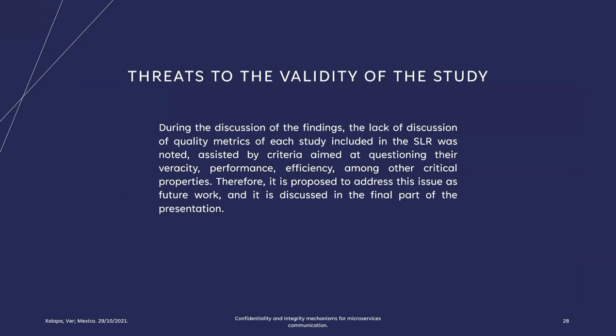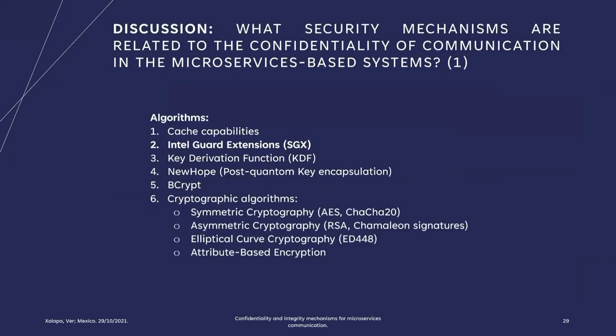During the discussion of the findings, the lack of discussion of quality metrics of each study included in the systematic literature review was noted, specifically criteria aimed at questioning their veracity, performance, density, among other critical properties. Therefore, it is proposed to address these issues in future work, and this is discussed in the final part of the presentation. After synthesizing the findings through metaggregation, it was possible to answer the research questions. In relation to Question 1, we found all the solutions associated with the principle of confidentiality, or with the information security characteristics of authenticity, authentication, or authorization.